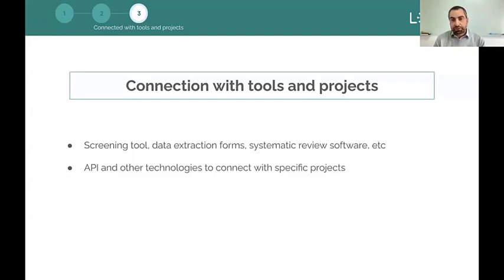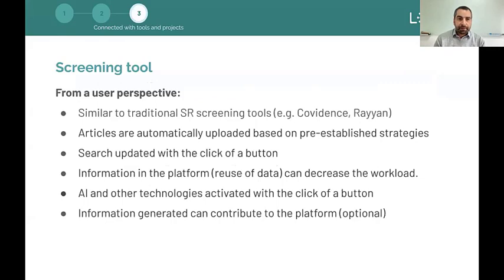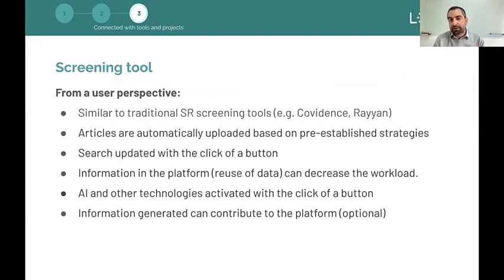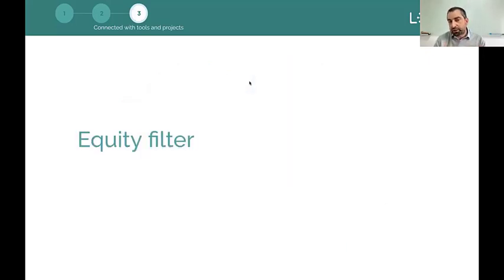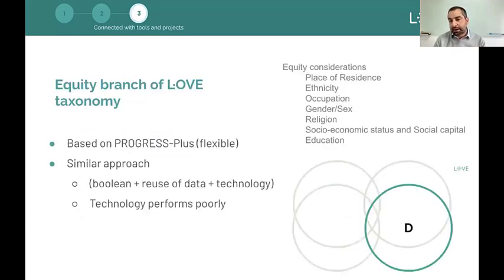Regarding connection with other tools, we expect to export this to the screening tool and share it in other systems. From the user perspective, the screening tool is very similar to tools like Covidence, Rayyan, or Abstrackr. Articles are automatically uploaded if they're in the repository, and it's easy to add from other sources. The search is updated with the click of a button — it's a living system — and the platform allows reusing data from other users and applying all the technologies to classify information.